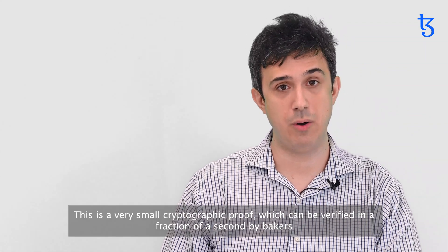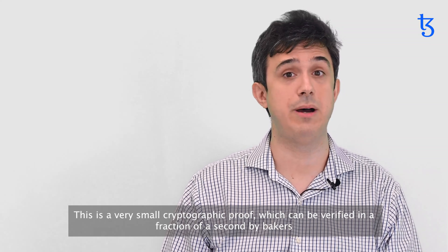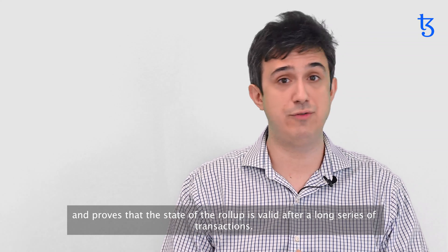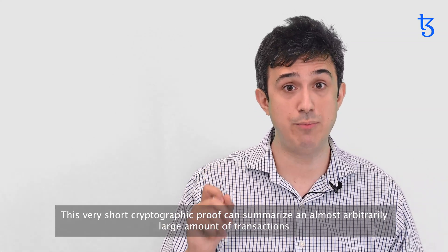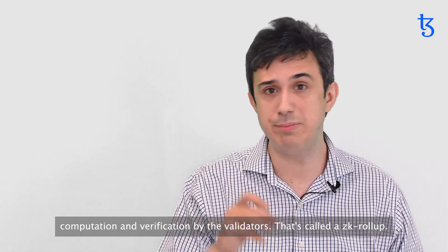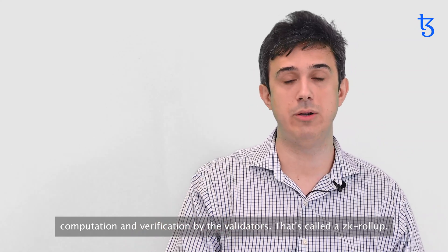The first is a zero-knowledge proof. This is a very small cryptographic proof, which can be verified in a fraction of a second by bakers, and it proves that the state of the rollup is valid after a long series of transactions. This very short cryptographic proof can summarize an almost arbitrarily large amount of transactions, computation, and verification by the validators. That's called a ZK rollup.